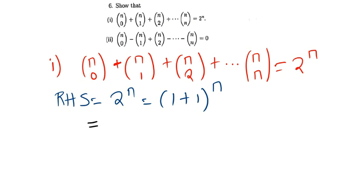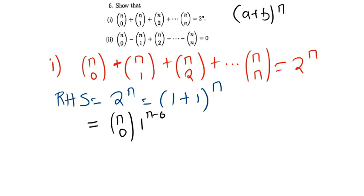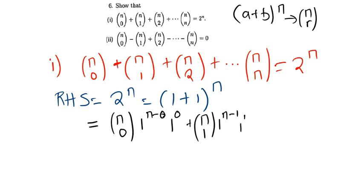Our right hand side becomes, using the binomial formula for (a+b)^n: the first term is n choose 0, times 1^(n−0), times 1^0, plus n choose 1, times 1^(n−1), times 1^1, plus n choose 2, times 1^(n−2), times 1^2, plus dot dot dot.